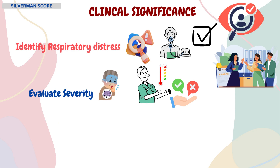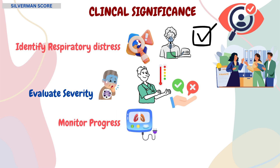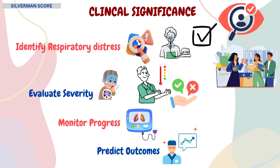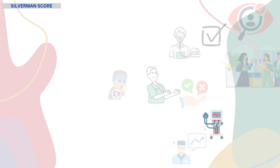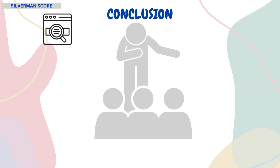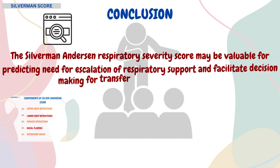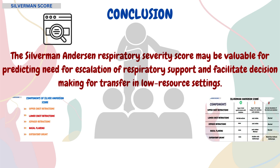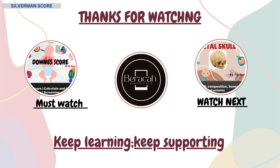The score can be used for progress monitoring of respiratory distress over time. The last significance of this tool is the prediction of outcomes — the score has been shown to predict outcomes such as the need for mechanical ventilation or the risk of mortality. In this video, we learned about the Silverman Anderson score, its components, interpretation, and clinical significance.